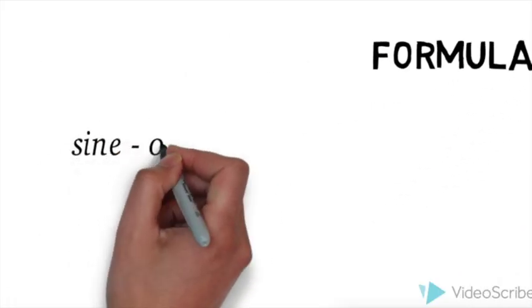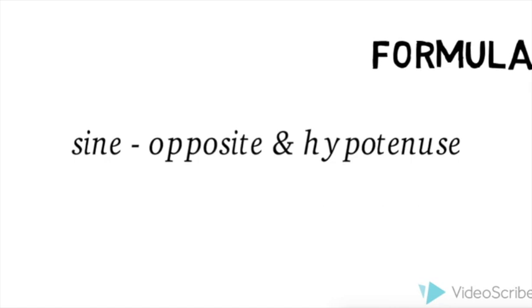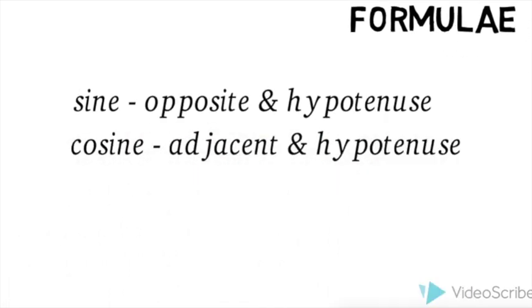There are three formulas involved in trigonometry: sine involving O and H, cosine involving A and H, and tangent involving O and A.